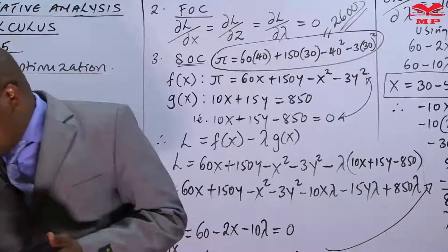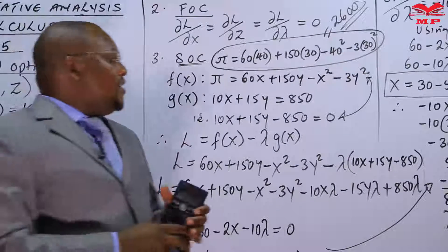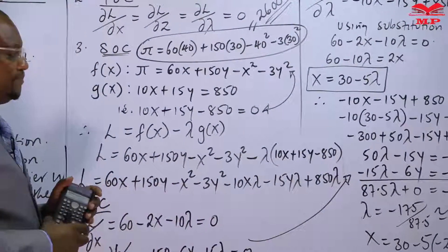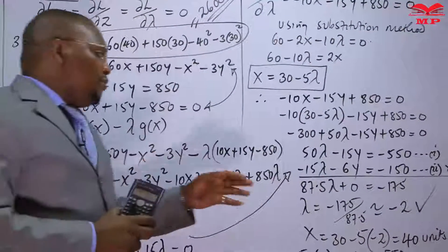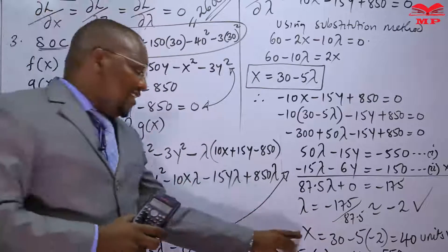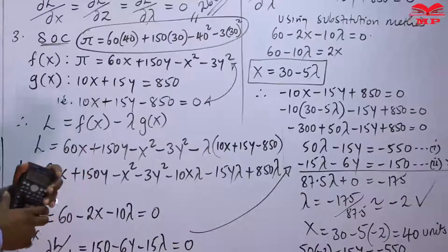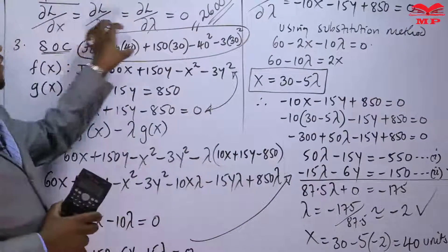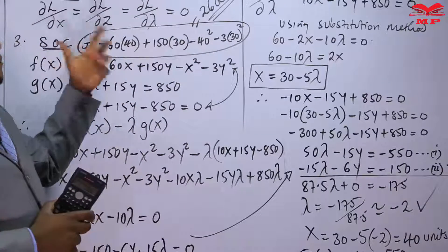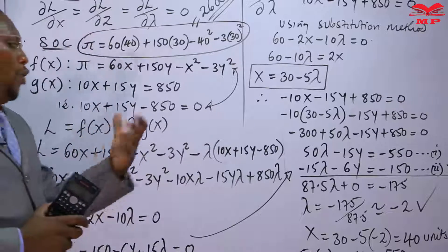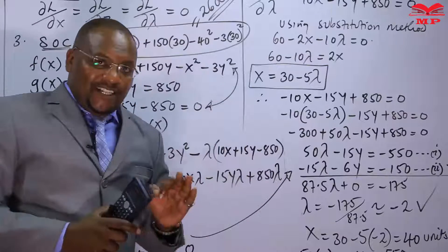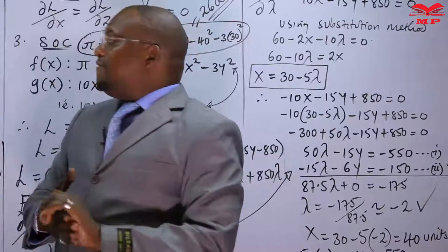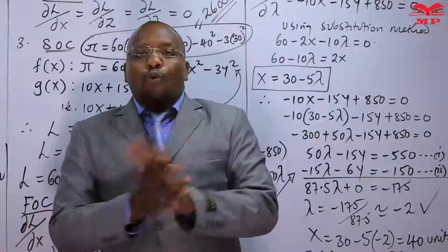Regarding the economic meaning of the multiplier: λ = −2 means that if you produce beyond the optimal quantities of 40 and 30 units, the profit will be affected by two times what you additionally produce. The negative value reflects the binding budget constraint — this is the essence of constraint optimization using calculus.